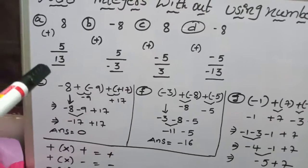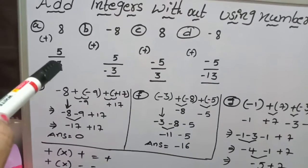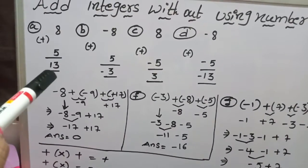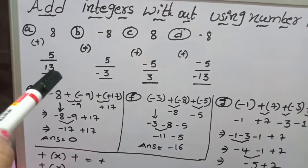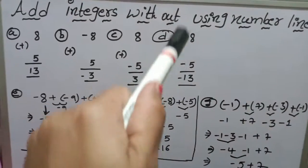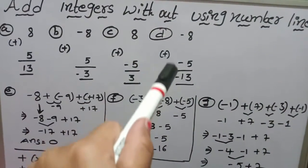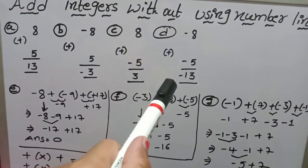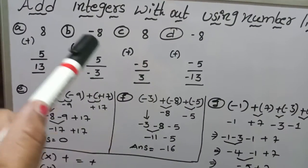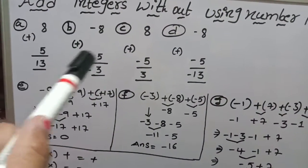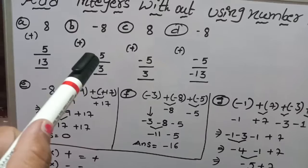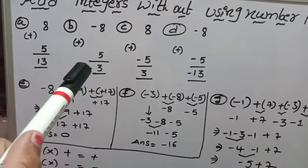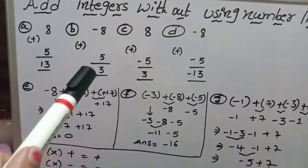To summarize the rules: if both are positive, add the numbers and give a positive symbol. If both are negative, add the numbers and give a negative symbol. If they have opposite signs, subtract and give the symbol of the biggest value.